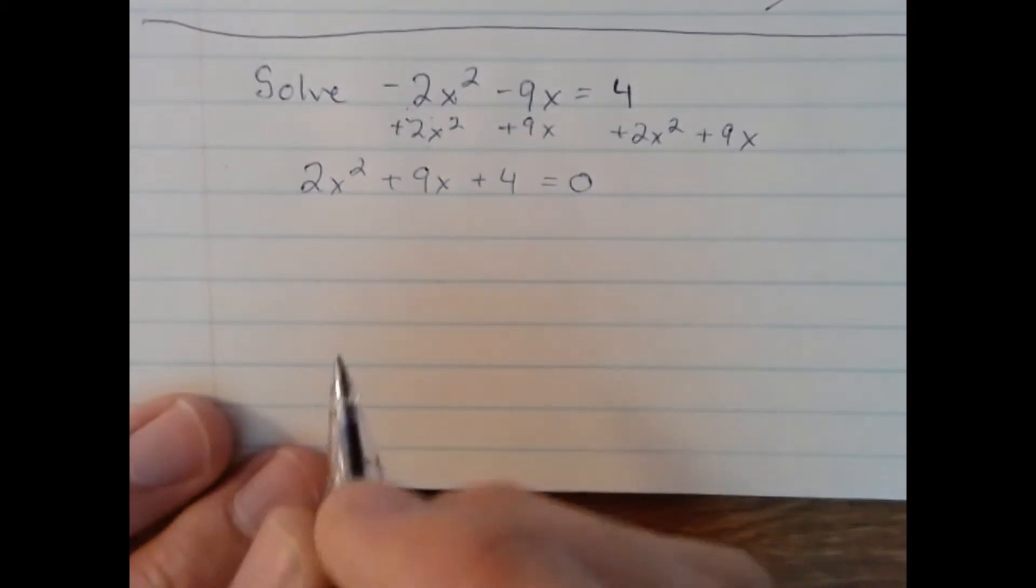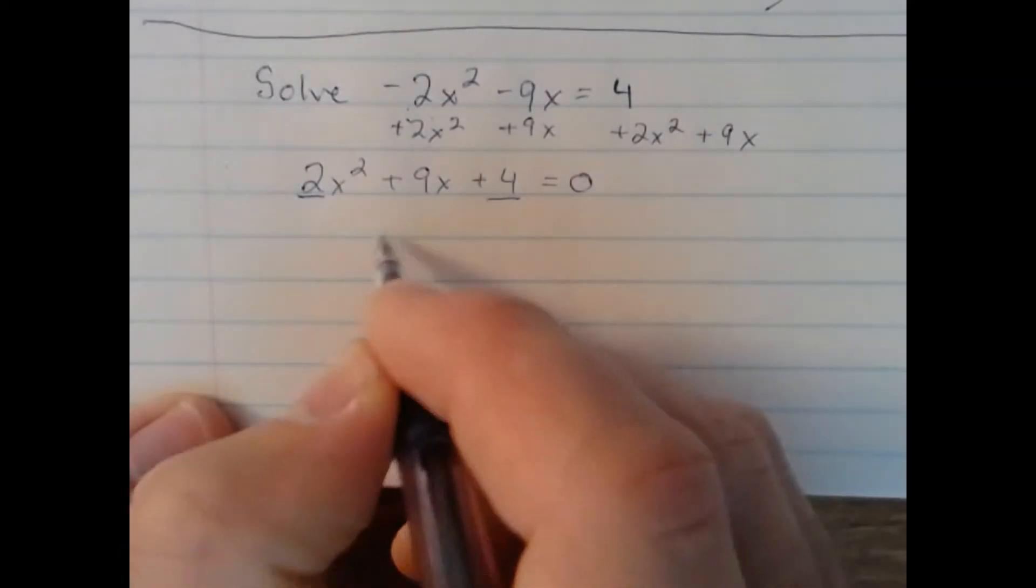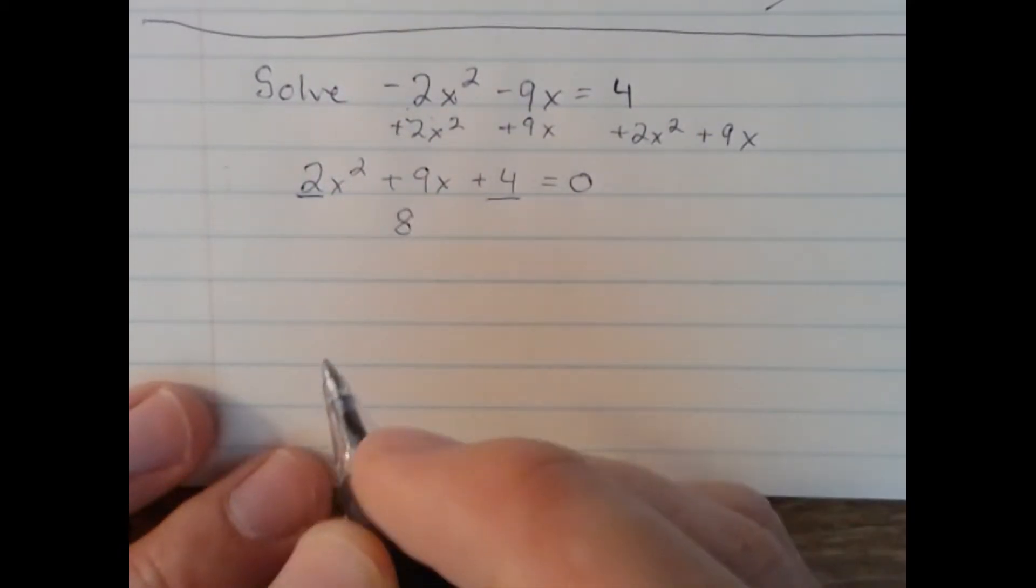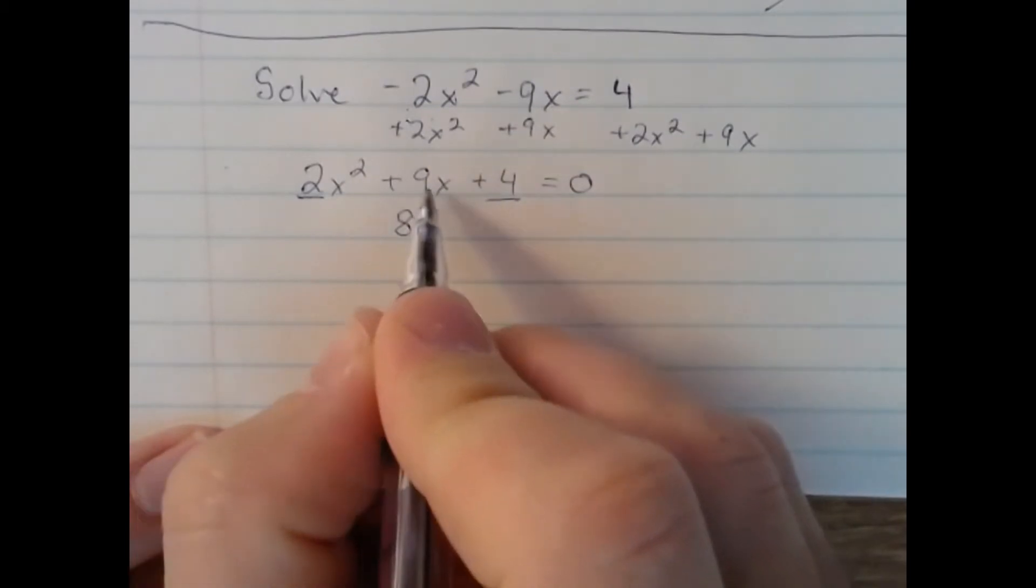Here we're going to have to use the AC method. 2 times 4 to give me 8. And then I look at 8 and think, what factors of 8 add up to 9?